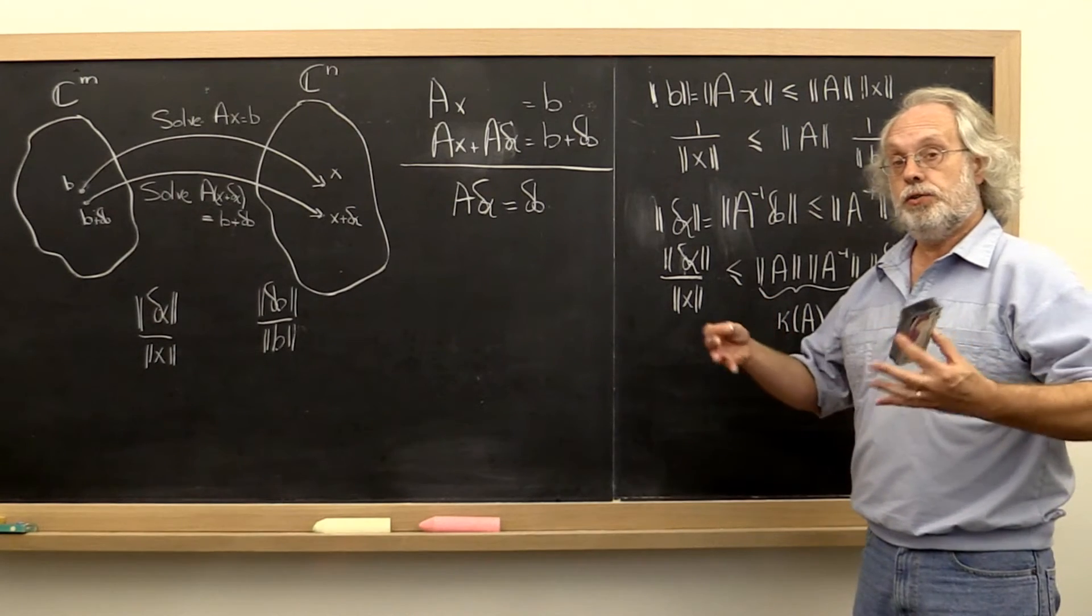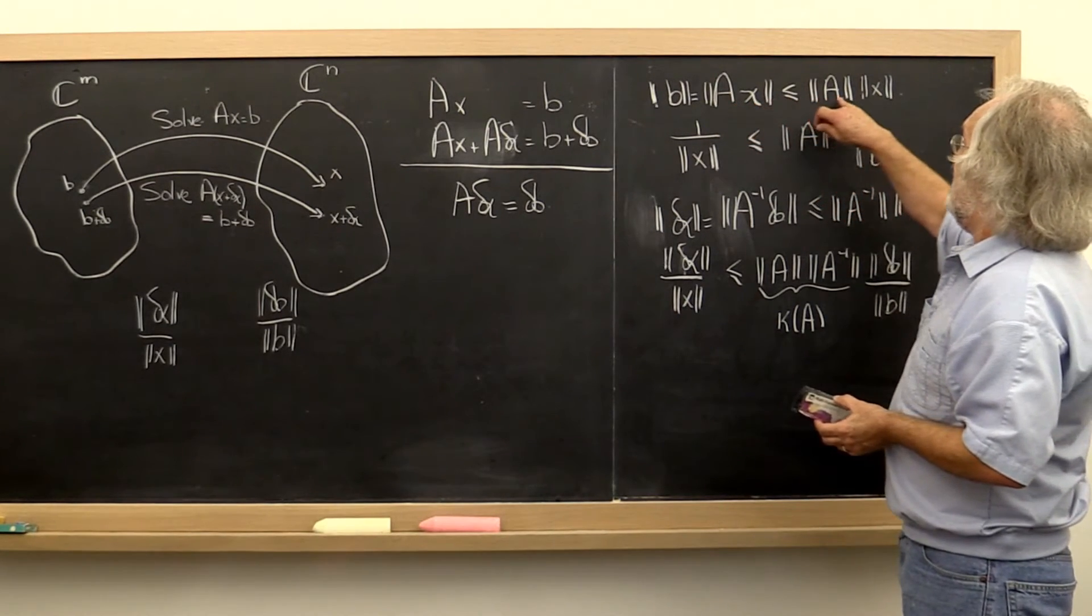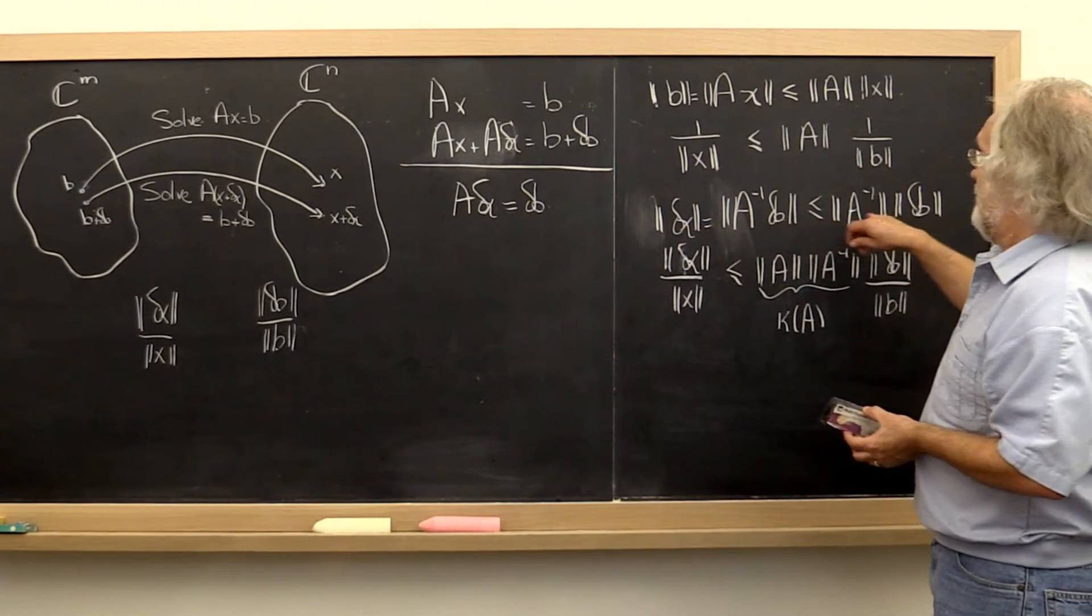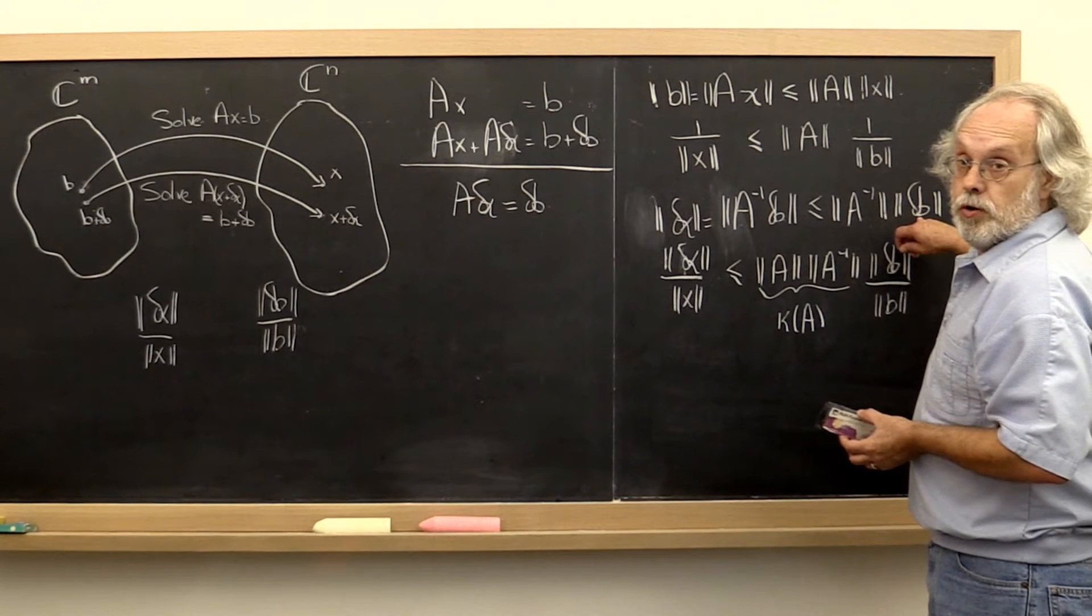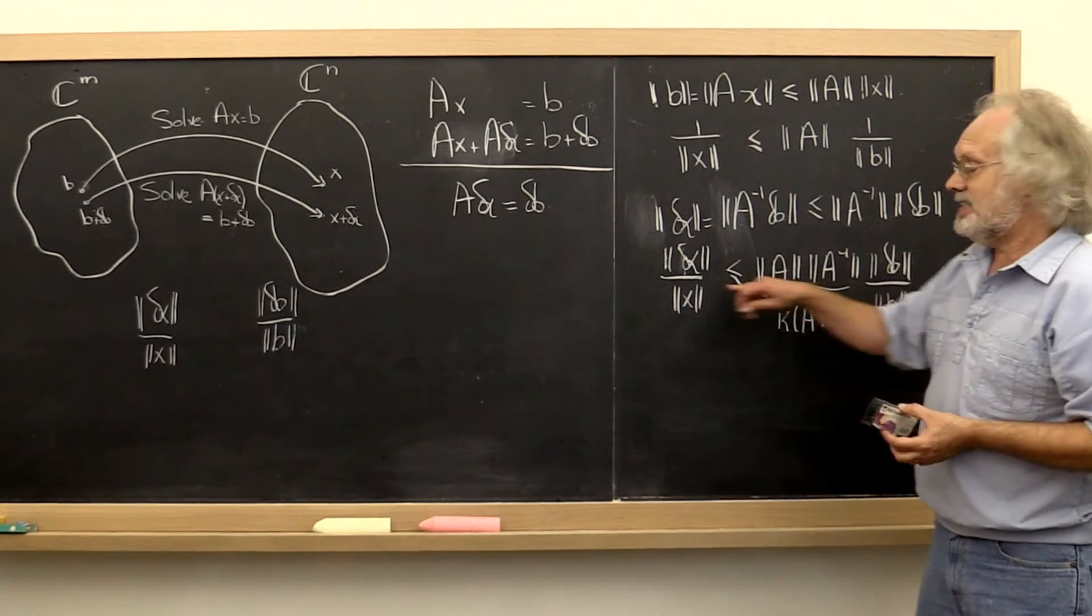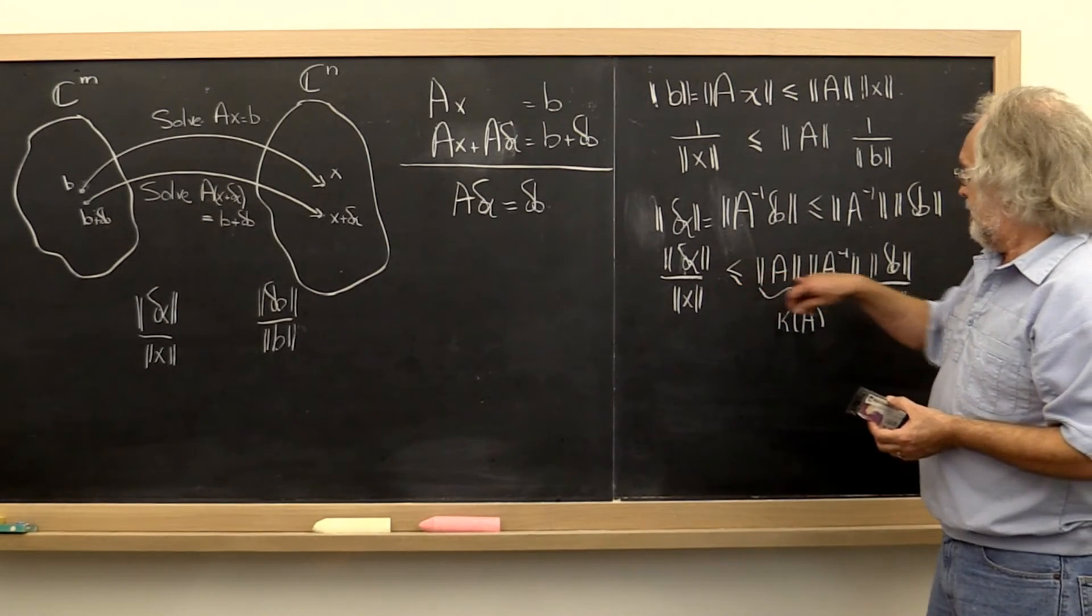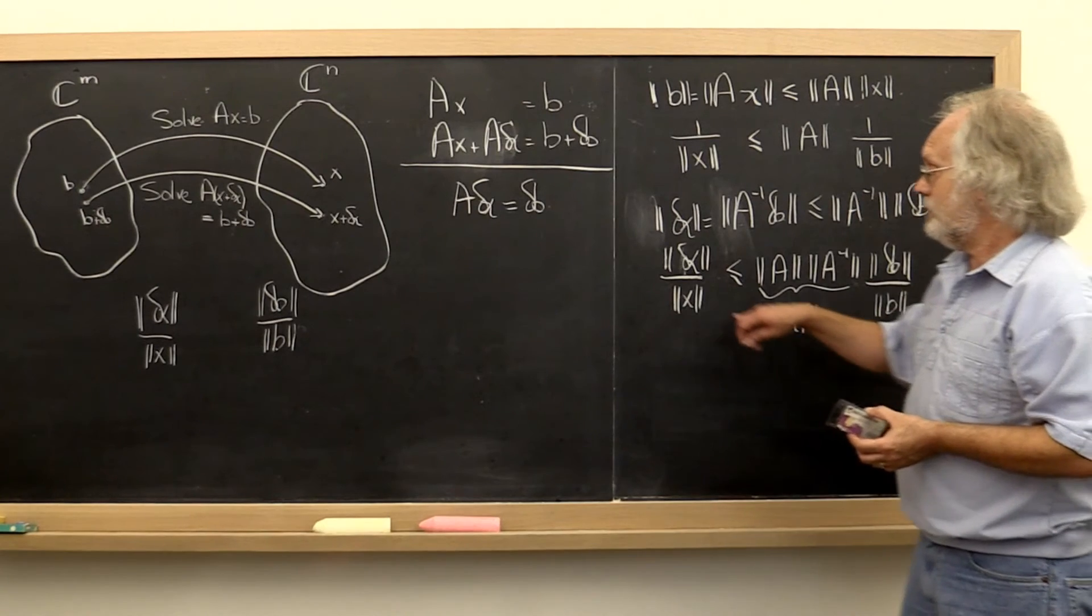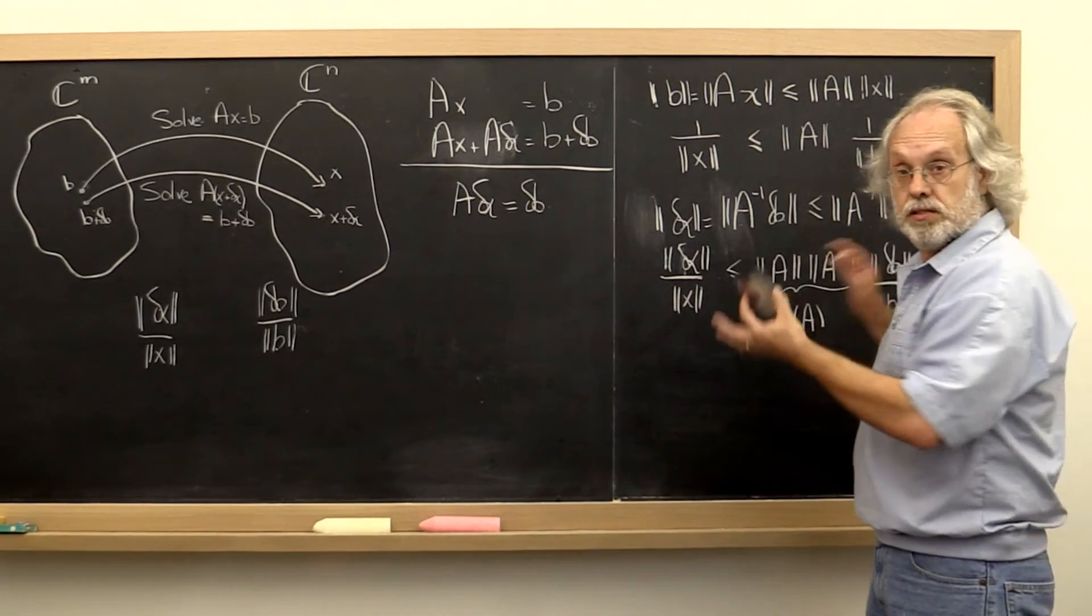When we talked about induced matrix norms, we saw that there is a vector x such that the norm of Ax equals the norm of A times the norm of x. Similarly, there is a choice for delta B such that the norm of A inverse times delta B equals the norm of A inverse times the norm of delta B. What does that mean? This is a tight bound. There are choices for delta B and B such that the relative error is actually amplified exactly by the condition number of A into the relative error in x. This is not a pessimistic view. This is something that could happen.